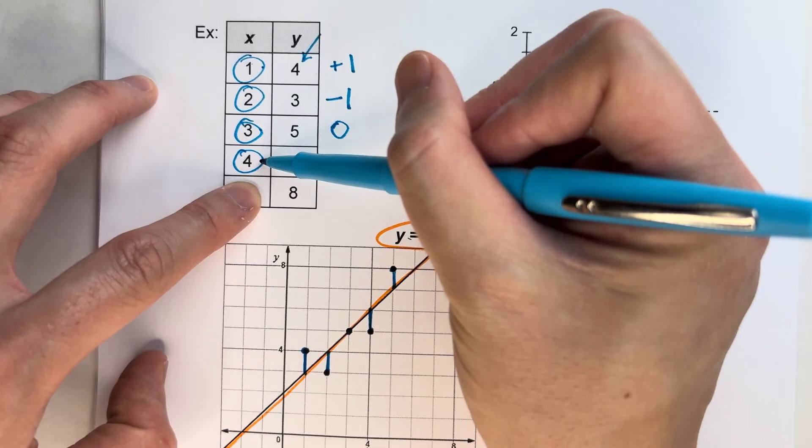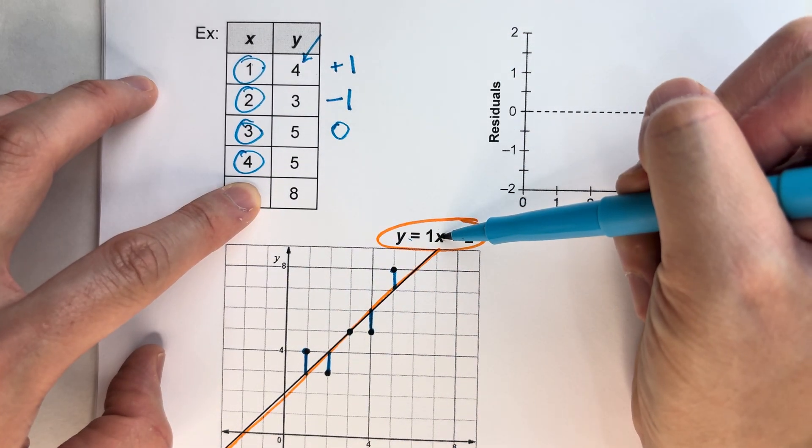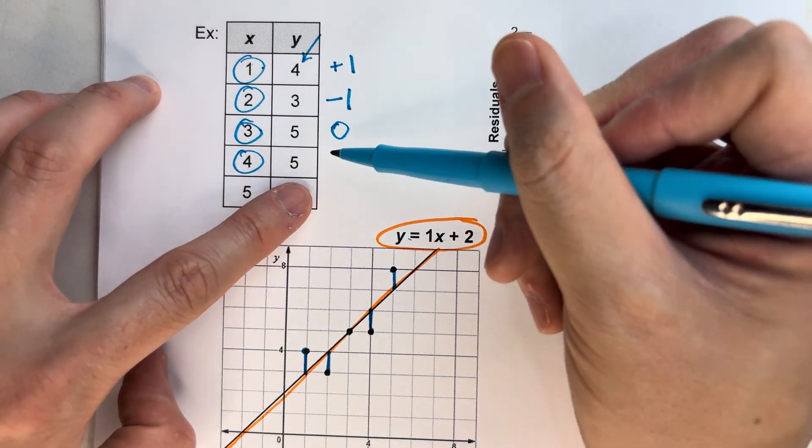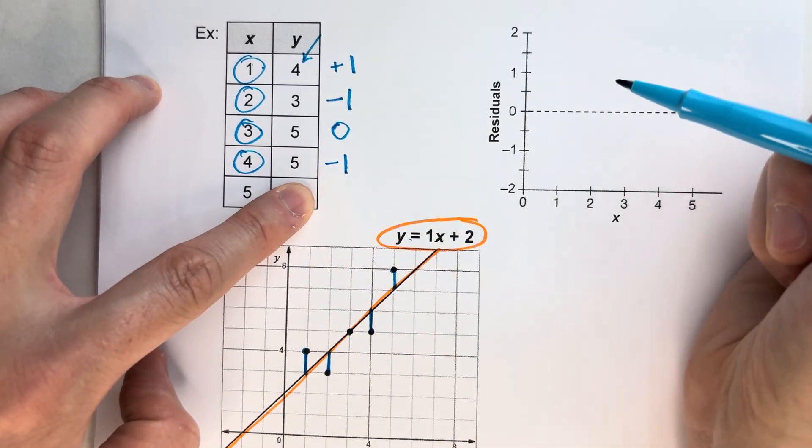Let's do the last two real quick. 4 for x. 1 times 4 is 4, plus 2 is 6. But I got 5. So I'm 1 below what I predicted.